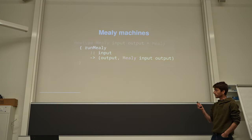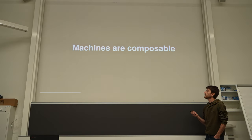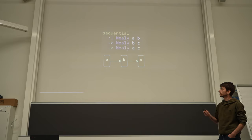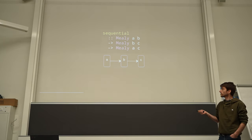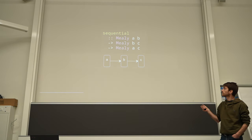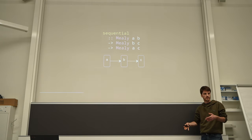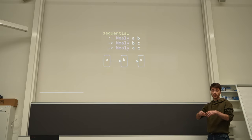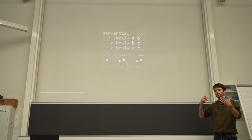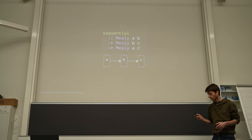The nice thing about such a data type is that it's really composable. For example, you can do sequential composition very easily. If you have two machines — one consuming A's and producing B's, and one consuming B's and producing C's — you can compose them sequentially. First you run your first state machine, you get some B's, and you feed them to your second state machine to get some C's. You just first run the first machine, then run the second machine.